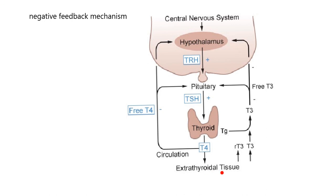Other tissues will convert T4 to T3. If there is free T4 in the blood, it has a negative feedback mechanism to both the pituitary and the hypothalamus. That tells both of these tissues to release less of the hormone they're making — less TRH from the hypothalamus and less thyroid-stimulating hormone from the pituitary. That's what the minus sign means.